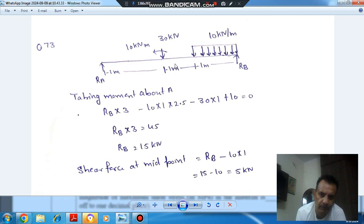So RB is 15, and the midpoint is here at a distance 1.5 from point B. So shear force at midpoint is due to this RB minus 10 into 1, that is 5 kN. The answer is 5 kN.